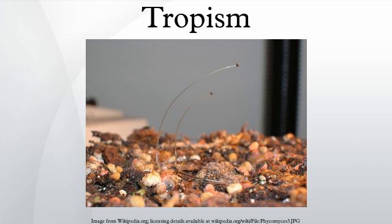Tropisms are usually named for the stimulus involved and may be either positive or negative. Tropisms are typically associated with plants. Where an organism is capable of directed physical movement, movement or activity in response to a specific stimulus is more likely to be regarded by behaviorists as a taxis or a kinesis.